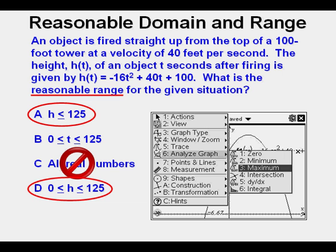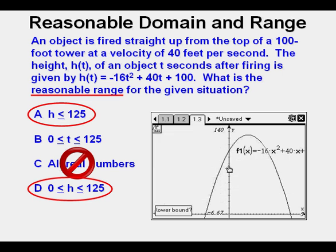We see the lower bound here with the hand on the y-axis to the left of the vertex we're trying to find. Press enter. Now it says upper bound and the hand is in the same place.